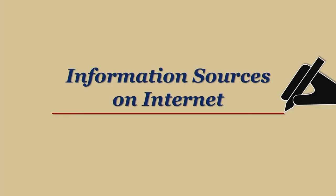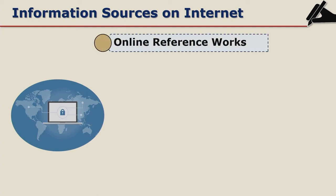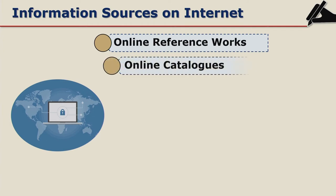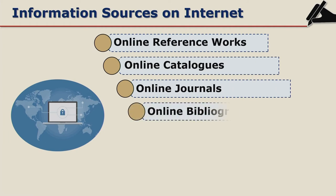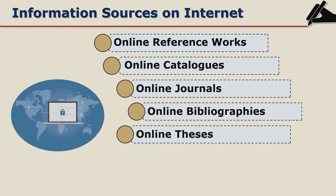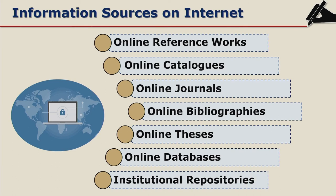Information sources are also available on the internet, like online reference works, online catalogues (they are called OPACs), online journals, online bibliographies, online theses, online databases, and institutional repositories.